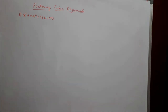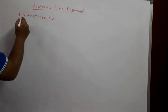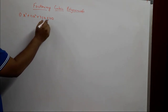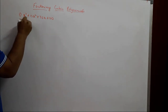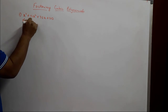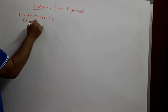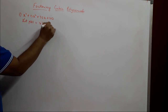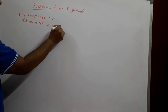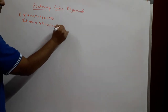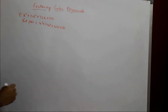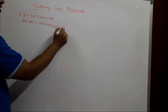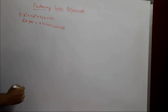The first problem is x³ + 13x² + 32x + 20. We will let p(x) equal x³ + 13x² + 32x + 20, and we will check for all the factors of the constant term, which is 20.